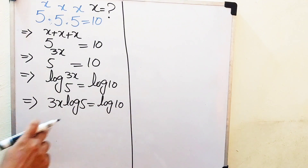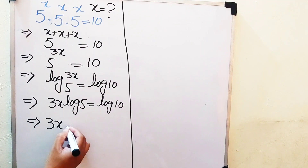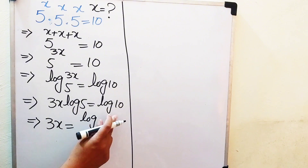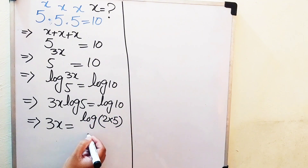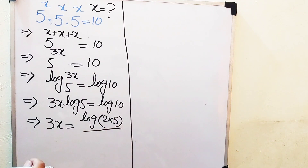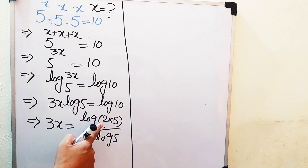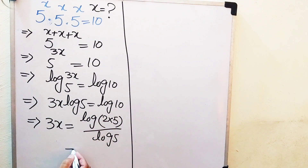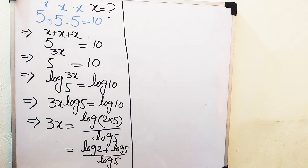In the next step, we move log 5 to the right-hand side, so 3x equals log of 10 divided by log 5. We write 10 as 2 times 5, so the numerator becomes log of 2 times 5, and dividing by log 5 gives us log(2·5) over log 5.